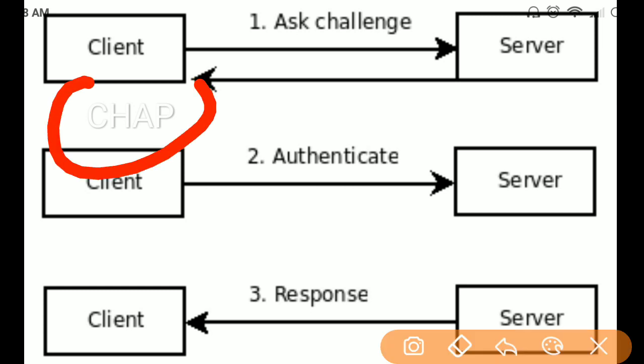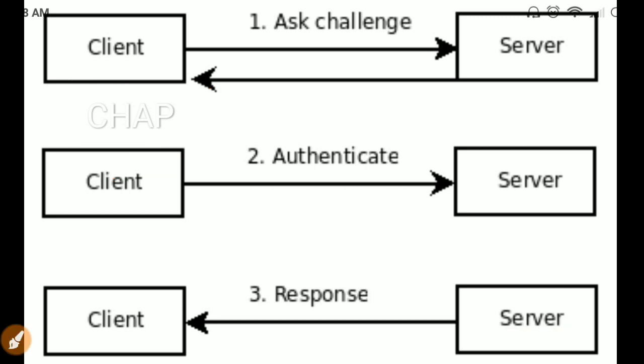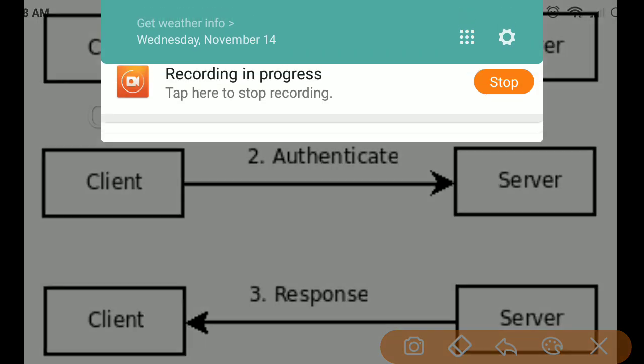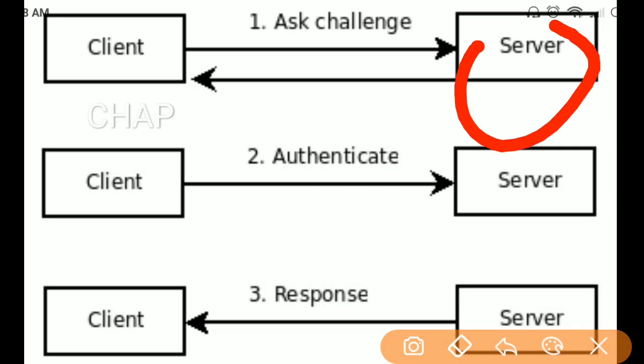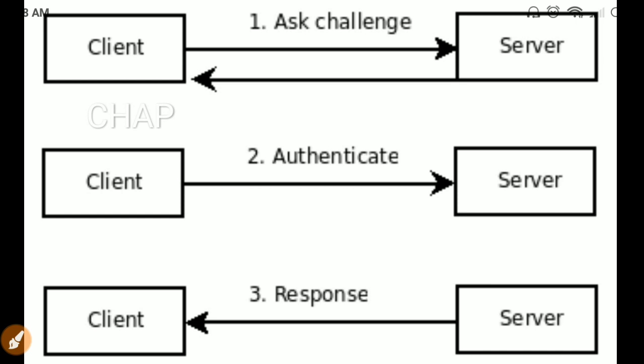The next protocol is the Challenge Handshake Authentication Protocol, or CHAP. This protocol is more secure because it does not share the password on the network in clear text. Passwords are created during the account enrollment process of a client and are only stored on the server. This protocol is also not susceptible to replay attacks because it uses a random value each time the client wants to connect to a network, and this random value is different each time.